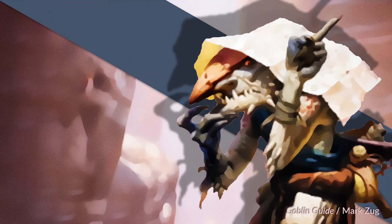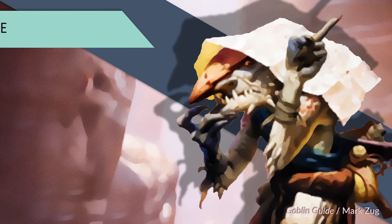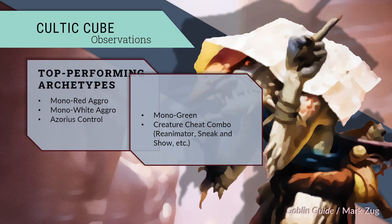So let's dig into the Cultic data. Mono Red was the highest performing deck in the environment — it had a positive win rate against every deck save for Boros. The next best deck was White Weenie, followed by Azorius Control. Among the macro archetypes supported, Creature Cheat combo, such as Reanimator, saw the least success.